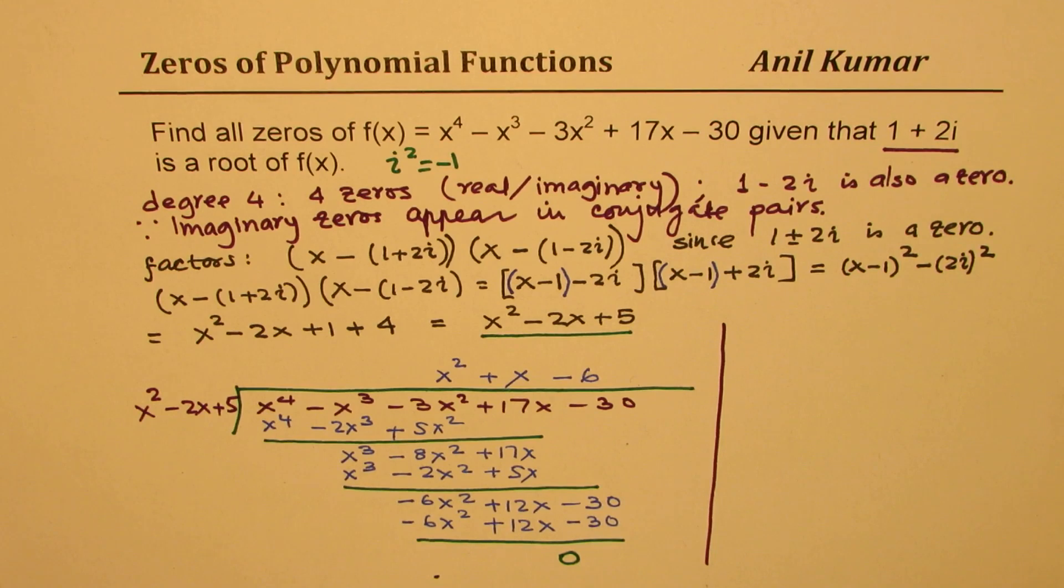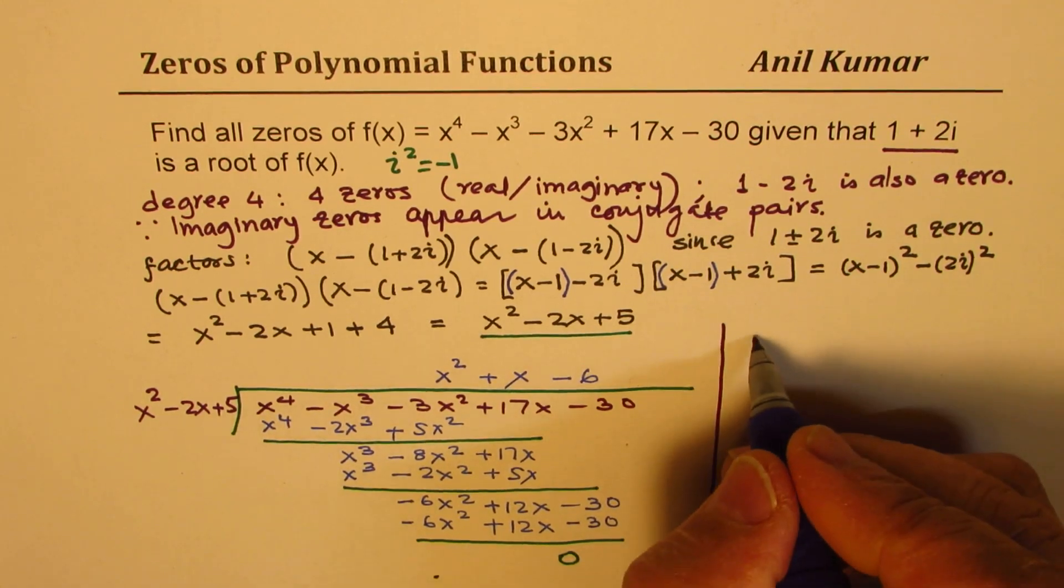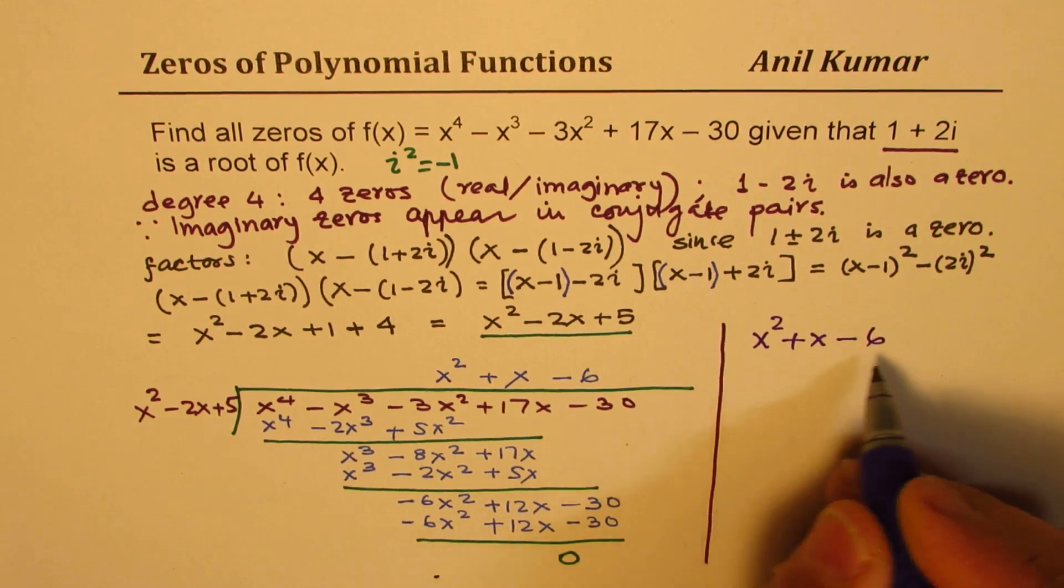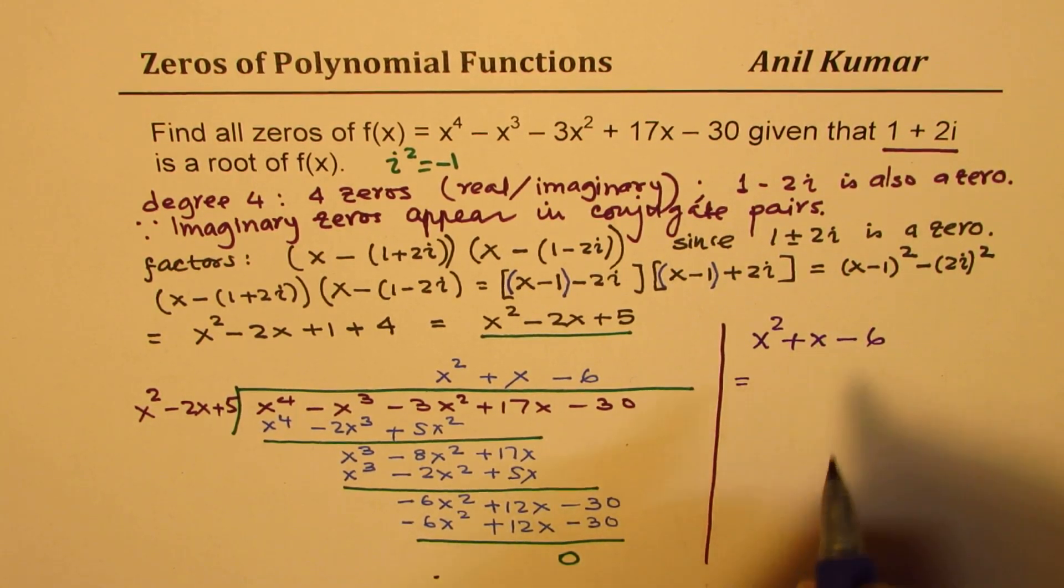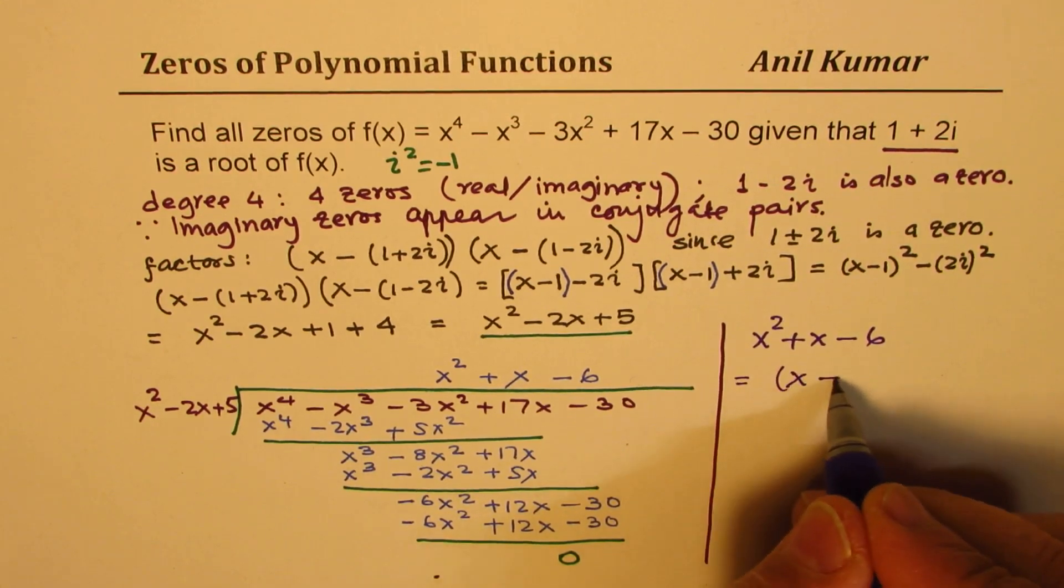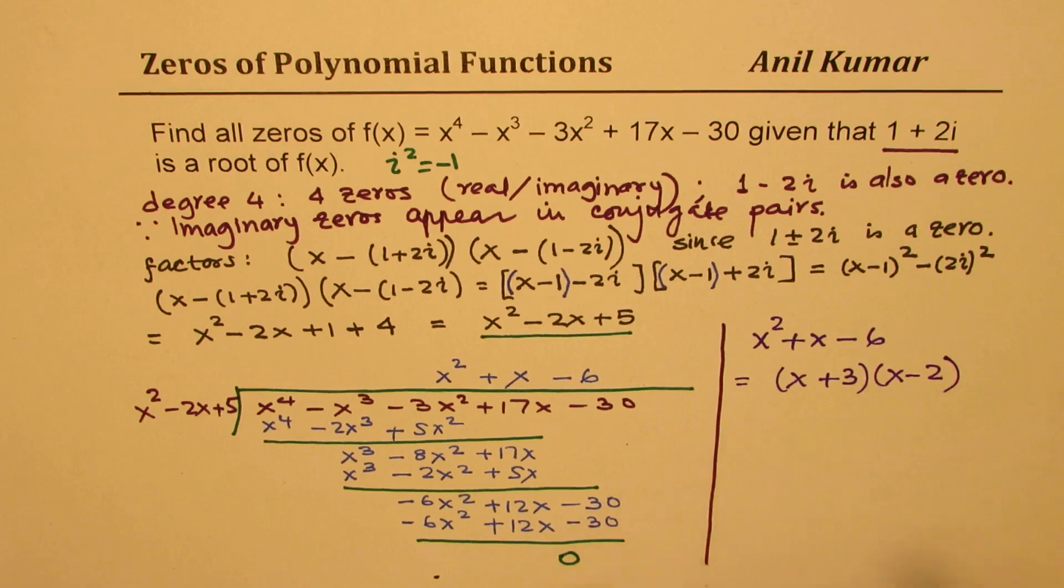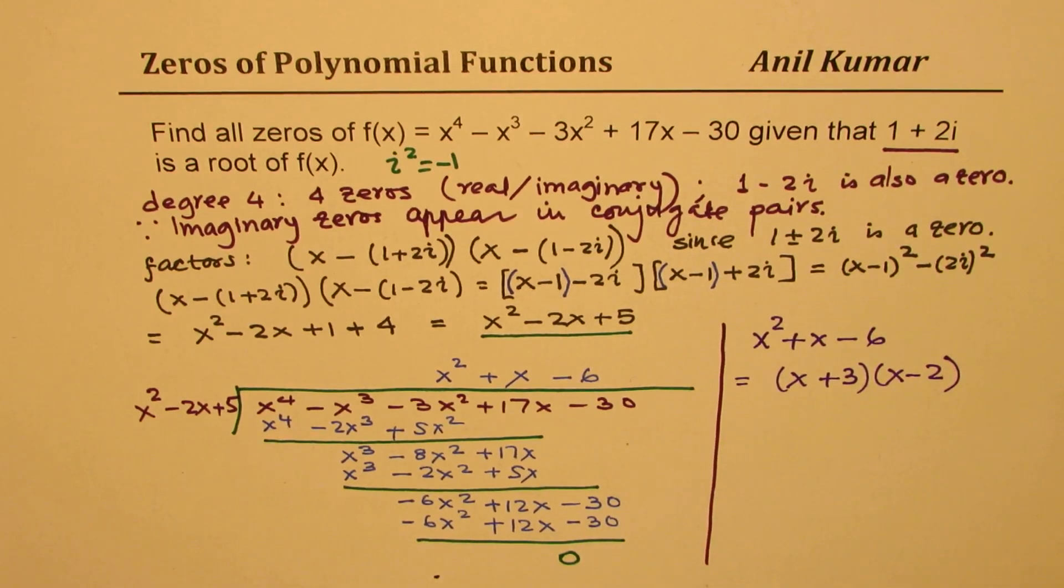Basically, we have come up with the quotient which is x^2 + x - 6. Now, we can factor the quotient x^2 + x - 6 using product and sum. So 2 times 3. It could be written as (x + 3)(x - 2). Perfect. We get all our factors now.